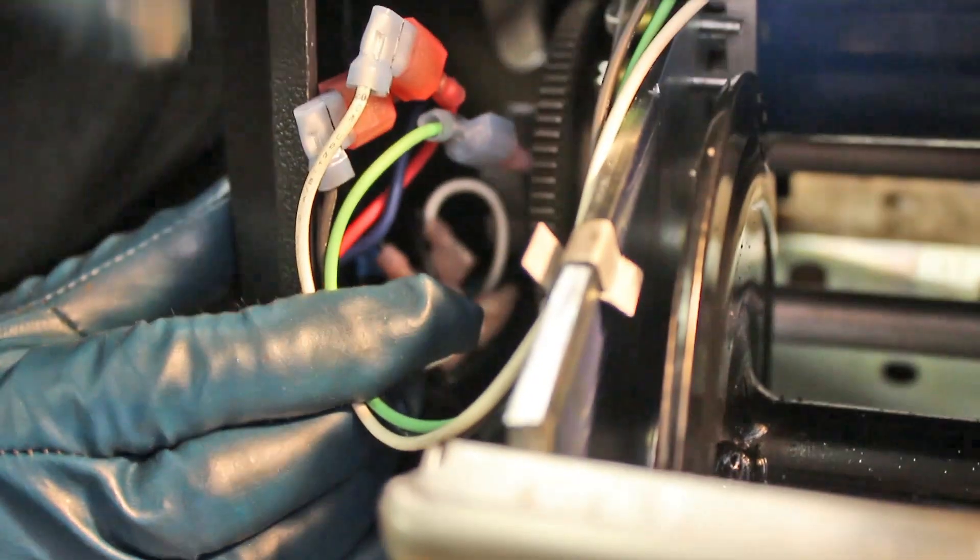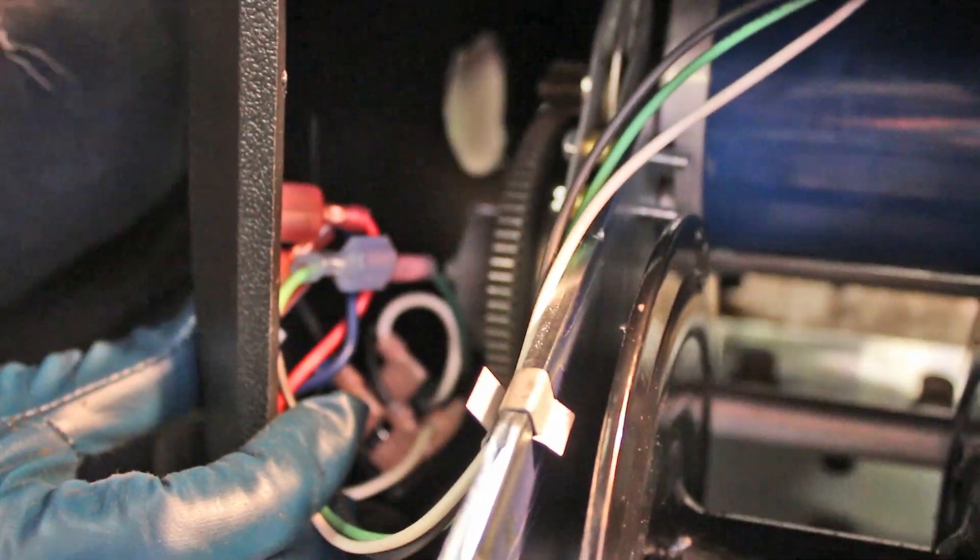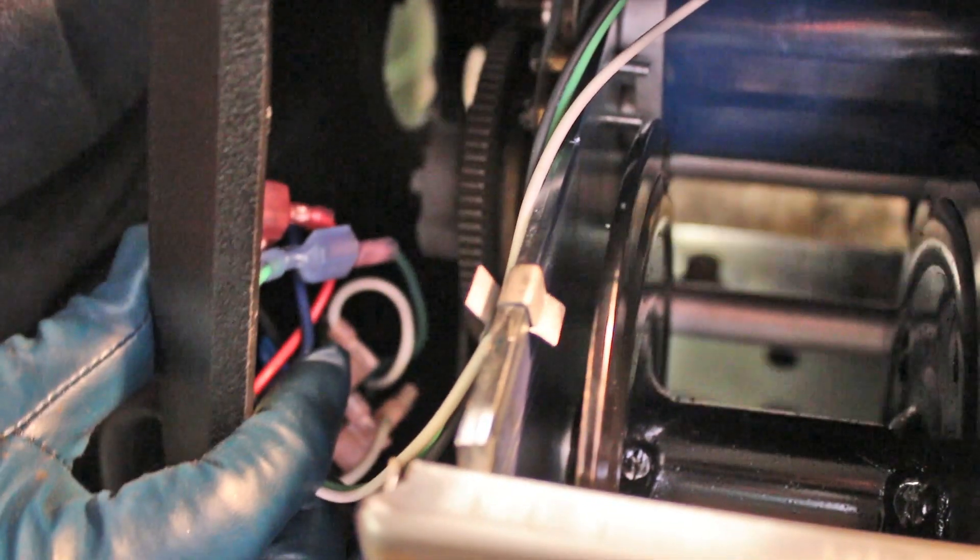It is absolutely critical that these three motor wires are tucked into the very corner of the cover, as far away from the winch gears as possible when reinstalling the cover, because if any of them are hit by the gears that spin when the winch is being used, you could experience a serious electrical malfunction.